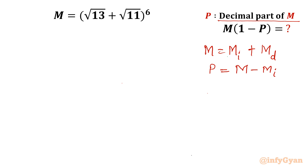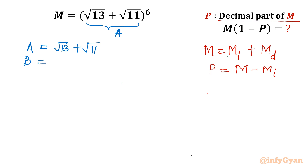Now let us begin with the substitution. Whatever is written in the bracket I will consider as a. So a is equal to square root 13 plus square root 11. I will also introduce another number b, where b is equal to root 13 minus root 11.